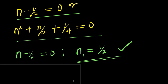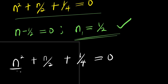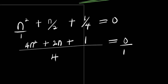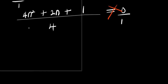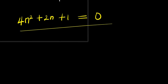Now to solve the other equation, I need to consider finding the LCM. This is n² plus n/2 plus 1/4 equals 0. The common LCM is 4, giving us 4n² plus 2n plus 1 equals 0. Next thing to do is to cross-multiply, so 4n² plus 2n plus 1 equals 0.